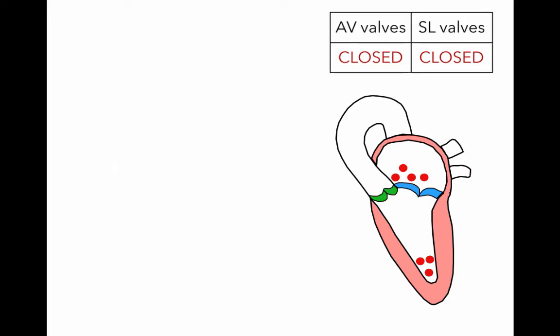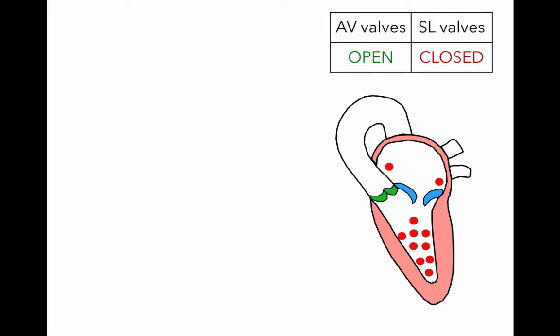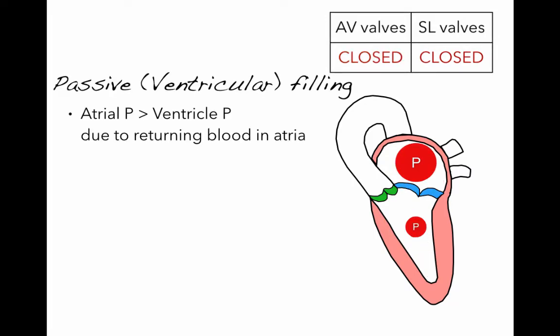Blood is going to start to accumulate — it's coming in through the pulmonary veins and accumulating in the atrium. Remember, if we add more blood to a given volume, blood pressure increases. That increase in pressure in the atria compared to the ventricle opens the atrial ventricular valves, and blood will now move from the atrium to the ventricle passively. This phase is referred to as passive filling.